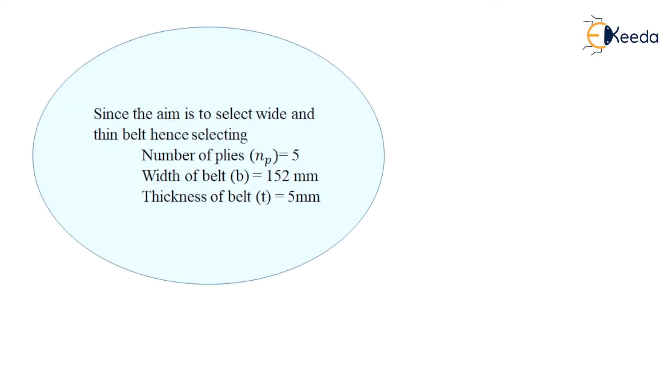Since the aim of the design is to select wide and thin belt, hence we will select number of plies NP is equal to 5, width of the belt as 152 mm, and the thickness of the belt T as 5 mm. So dear students, this way we have found out the different parameters required in the numerical. Thank you.